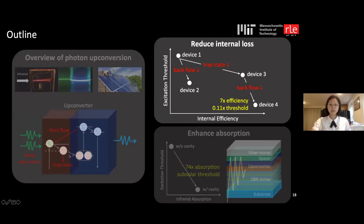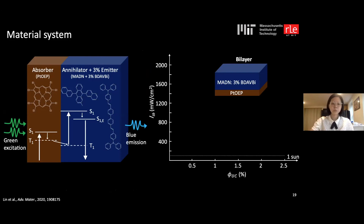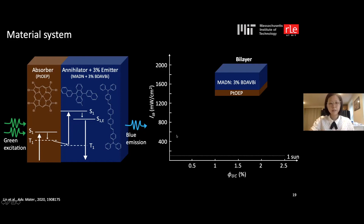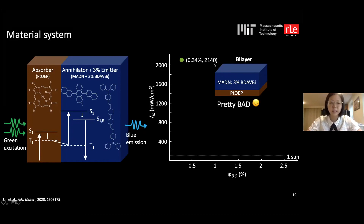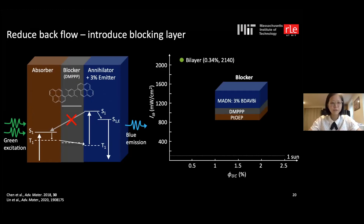To study internal loss, we chose a green-to-blue upconversion system with platinum porphyrin as the absorber and an anthracene derivative as the annihilator — a well-studied, high-performance solution system. We deposited these materials by thermal evaporation for a completely dry-processed solid-state system. The very first bilayer device of absorber and annihilator plus emitter gave only 0.34% efficiency at very high required excitation intensity.